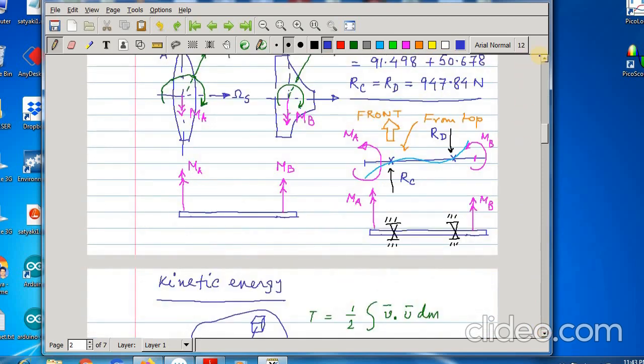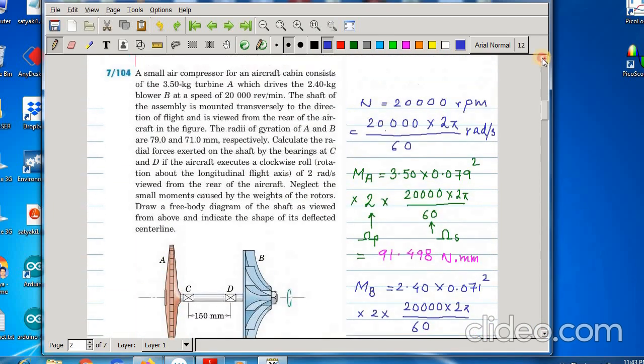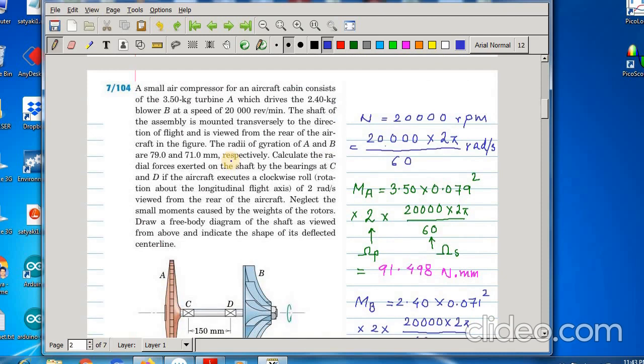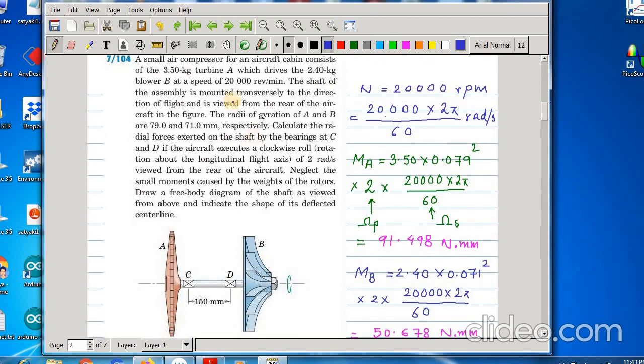Now, let us go to problem number 2. The problems are taken from Merriam Craig 7th edition. A small air compressor, a small air compression for an aircraft cabin consists of 3.50 kg turbine A, which drives the 2.40 kg blower B at a speed of 20,000 rpm.